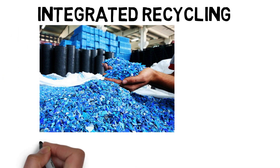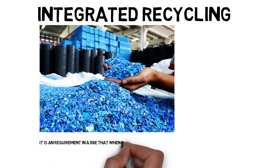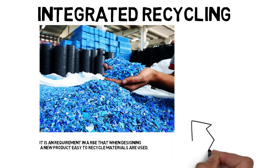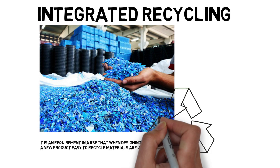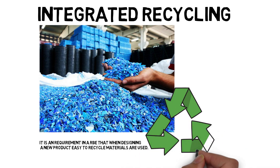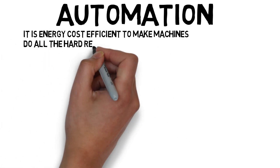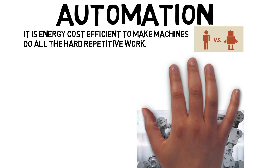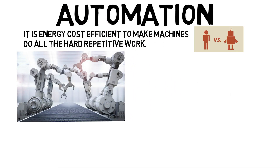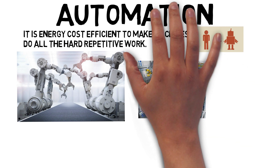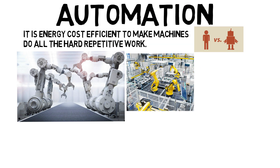It is a requirement in an RBE that when designing a new product, easy-to-recycle materials are used. In our monetary system today, there is no incentive for this — the cheapest materials are used to ensure money-cost efficiency regardless of whether they are environmentally friendly. Today it's much cheaper not to recycle, so many companies have no choice if they want to survive in a competitive market. It is energy-cost efficient to make machines do all the repetitive hard work, which is why optimization is a central part of an RBE, with effort made to adapt products so they can easily be produced by machines.